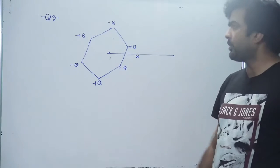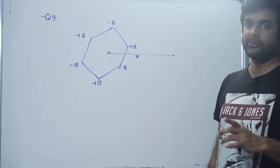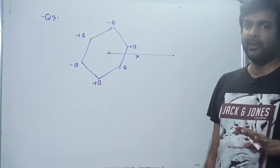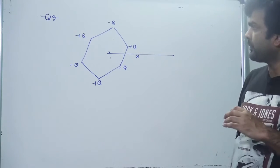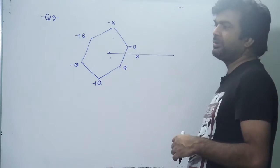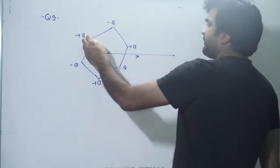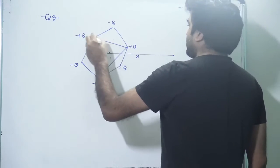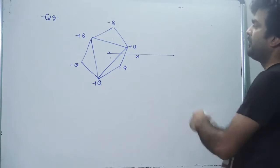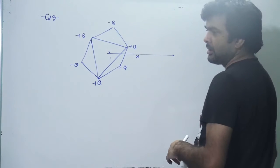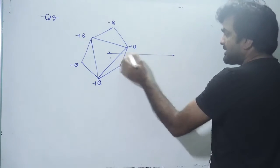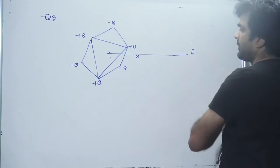We have to find the magnitude of electric field at distance x from the center of the hexagon. There could be two ways, both based on symmetry. First, let us focus on any three charges which are positive. Because of these three charges, by symmetry, the perpendicular component will cancel and only the component along this line will remain — let us call it E, due to these three charges.